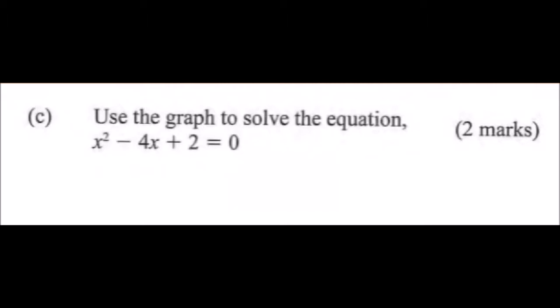In section C, we are told to use a graph to solve the equation x squared minus 4x plus 2 is equal to 0. And remember, our function was x squared minus 4x plus 2 is equal to y. So what it means is we find the values of x when y is equated to 0. The values of x will be those points where the graph cuts the x-axis, because that is where our y is 0.